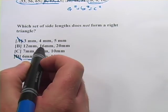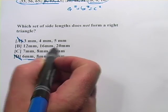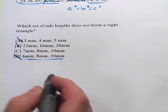Here we've got 12, 16, 20. Is that 3, 4, 5? Divide them all by 4, and you get 3, 4, 5. So that's a right triangle.